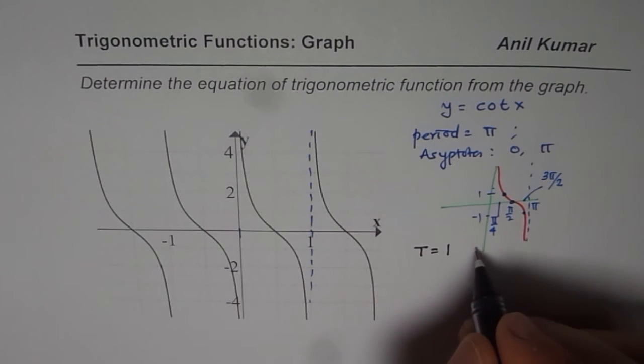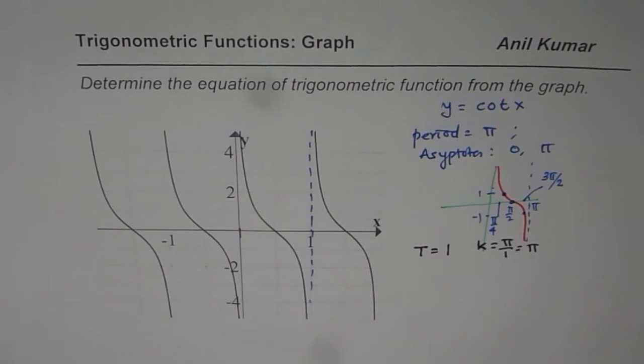If T is 1, then k will be π by 1, which is π. That is the first thing.